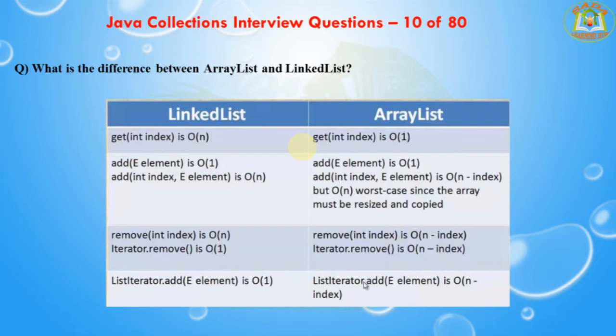For removal in LinkedList, remove(index) is O(n) and iterator.remove() is O(1). In ArrayList, remove(index) is O(n - index). In summary, ArrayList uses a dynamic array and is better for storing and fetching data; LinkedList uses a doubly linked list and is more efficient for manipulations.